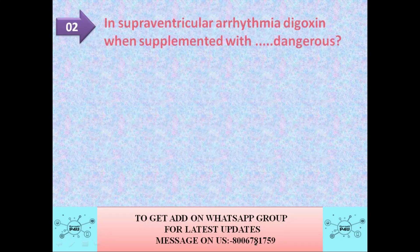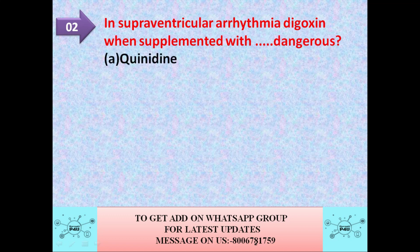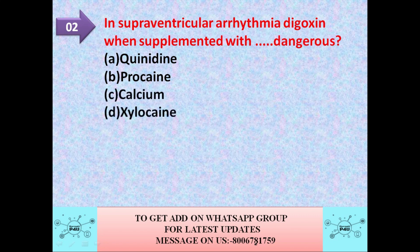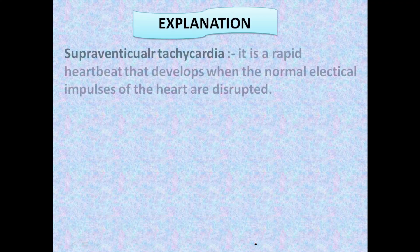Moving to the next question: in supraventricular arrhythmia, digoxin when supplemented with which drug becomes dangerous? Options are: A — quinidine, B — procaine, C — calcium, D — xylocaine. The correct answer is quinidine. Digoxin when supplemented with quinidine becomes dangerous.